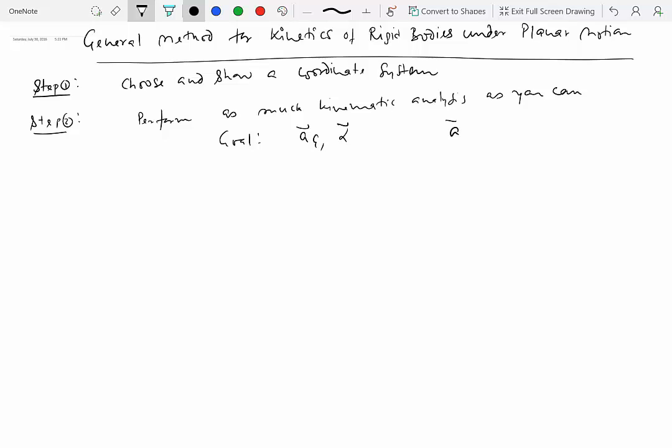So remember Ag in a plane is given as Ag in X direction i-hat plus Ag in Y direction j-hat. So maybe you can find just this component, maybe just this component, or both the components. Or maybe you don't know what Agx and Agy are, but you know the direction they're pointing in. Same thing with the alpha.